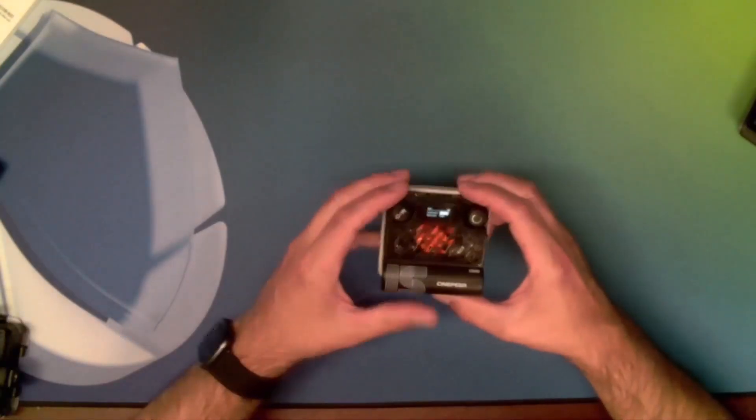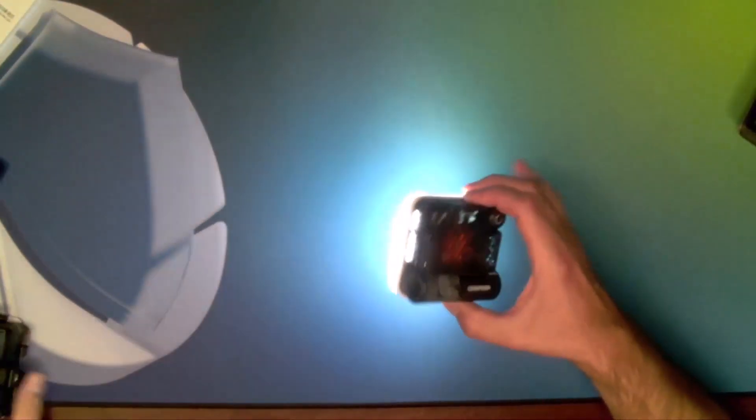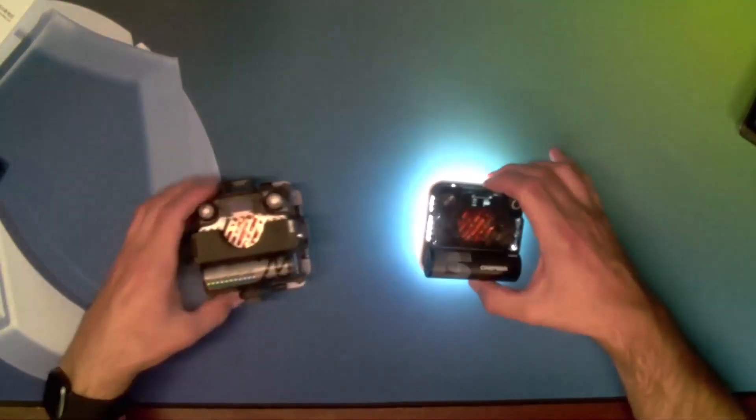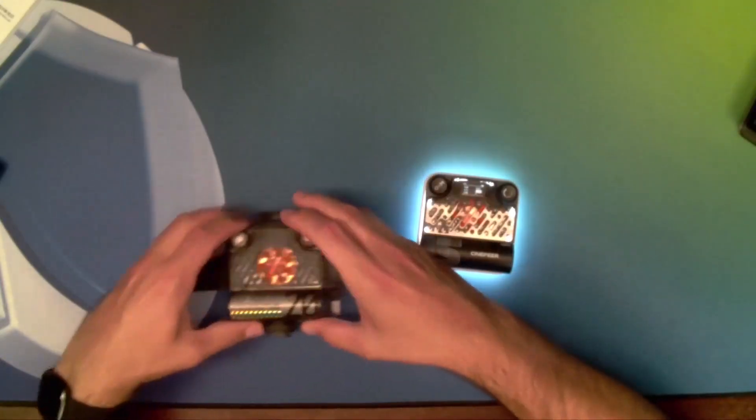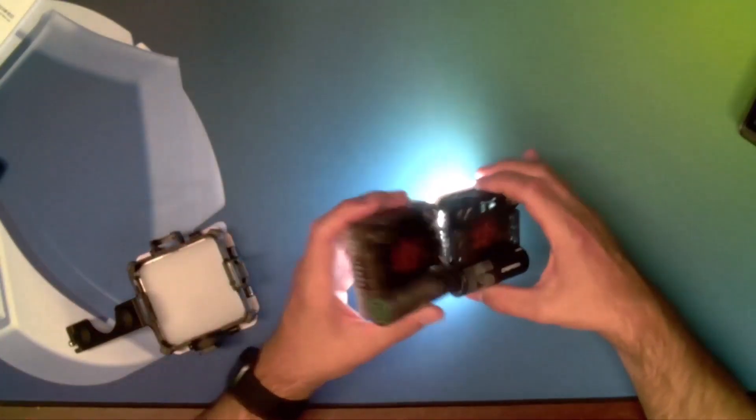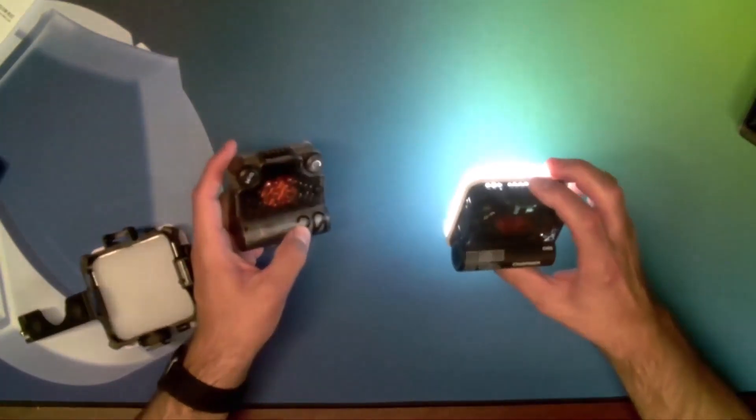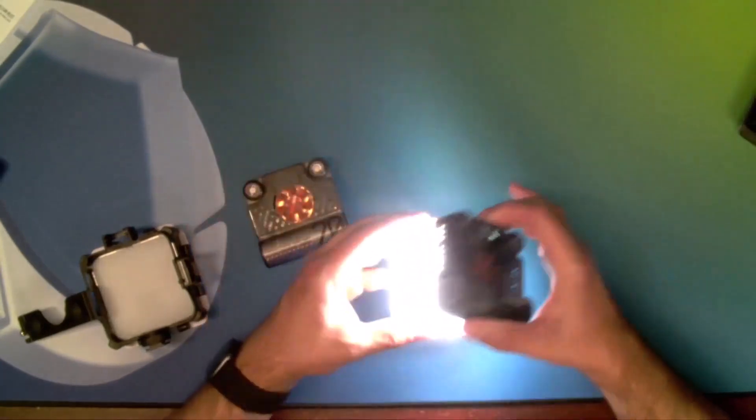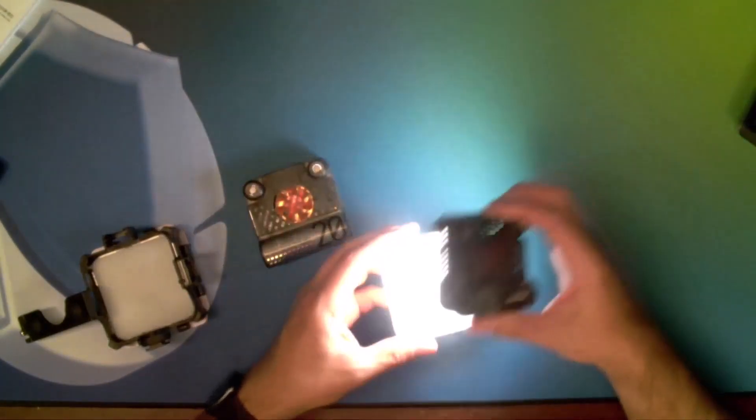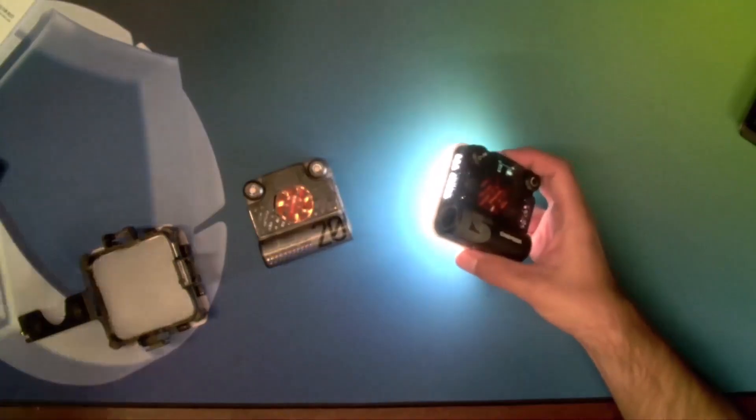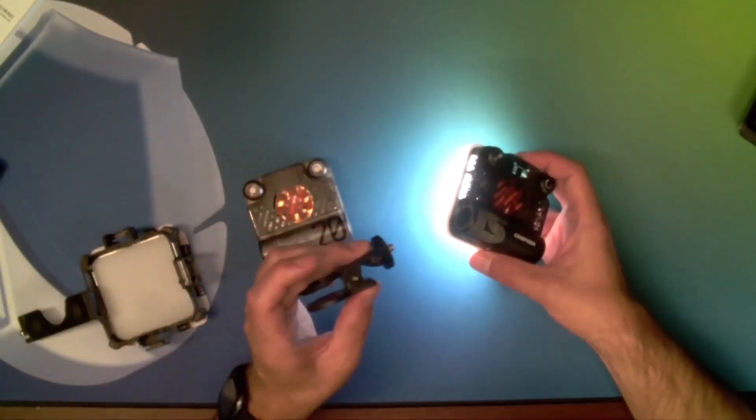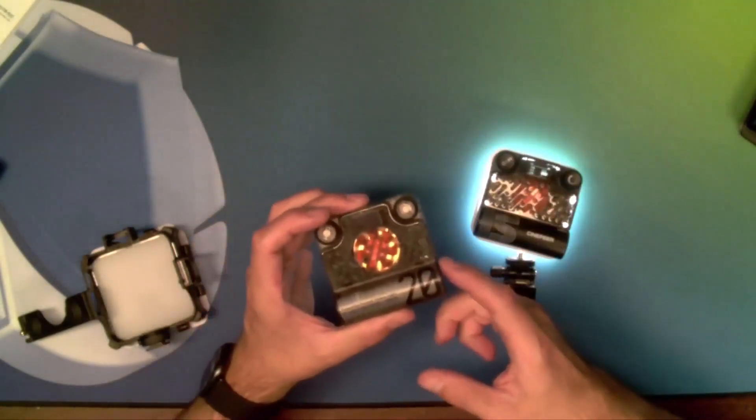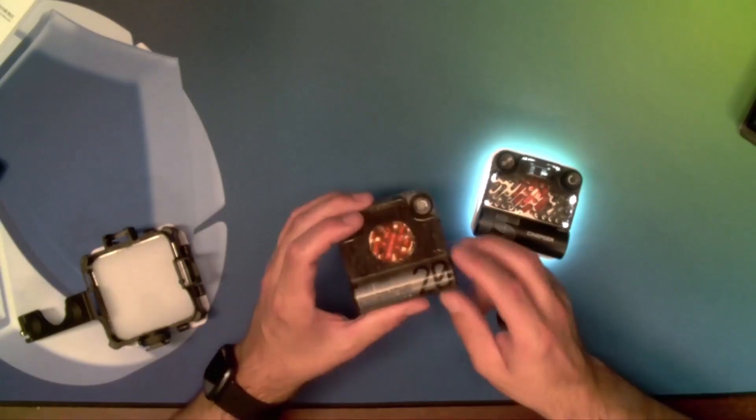There's one thing I find really nice about this. I have a different Zhiyun light, the Fiveray M20, which is physically almost identical in size. However, the Cinepure is about 40% lighter. The bare light weighs 5 ounces. If you add the silicone sleeve and phone clamp, it's 7 ounces total, which is the weight of the bare Fiveray M20.